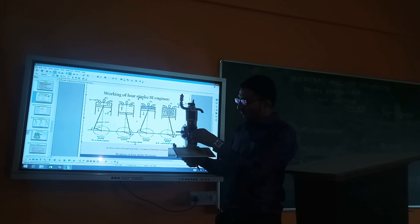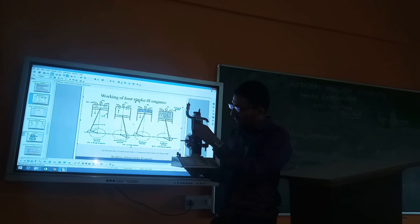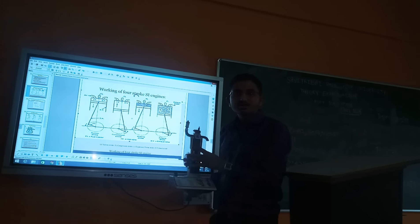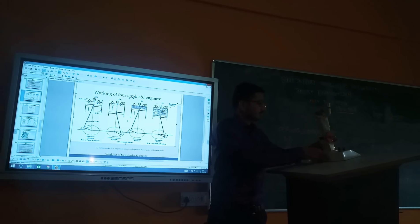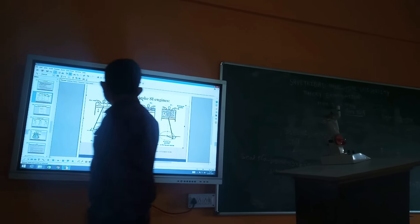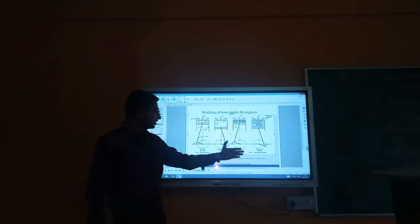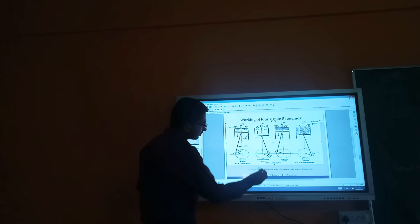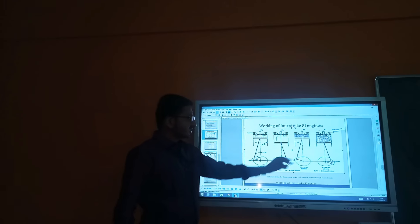One end connects to the piston, which moves up and down — those are the two positions: top dead center (TDC) and bottom dead center (BDC). Now we will learn the working of the SI engine. The SI engine cycle is classified into 4 categories: first is the suction stroke, then the compression stroke, then the working stroke — also called the power stroke — and last is the exhaust stroke.